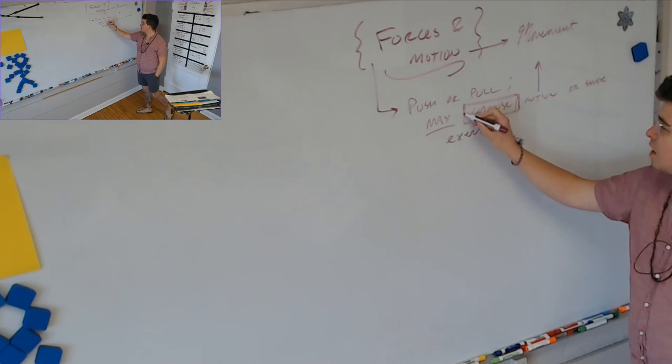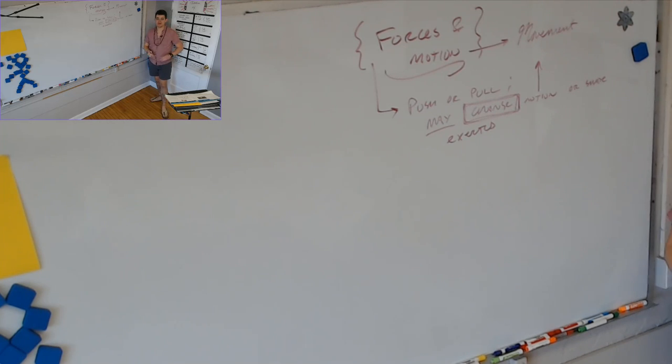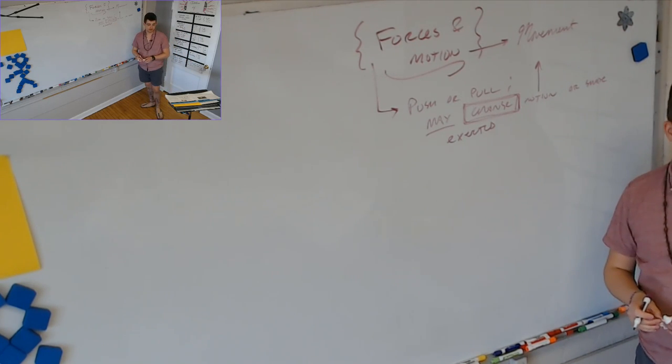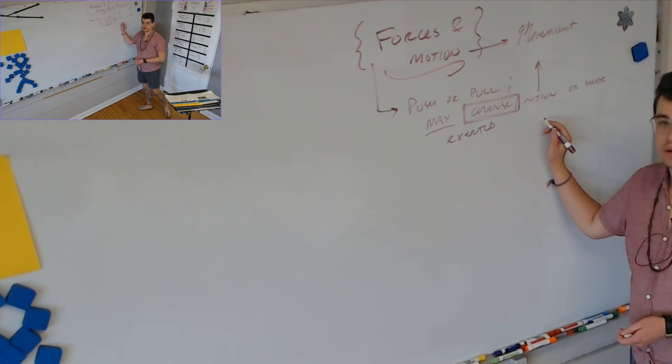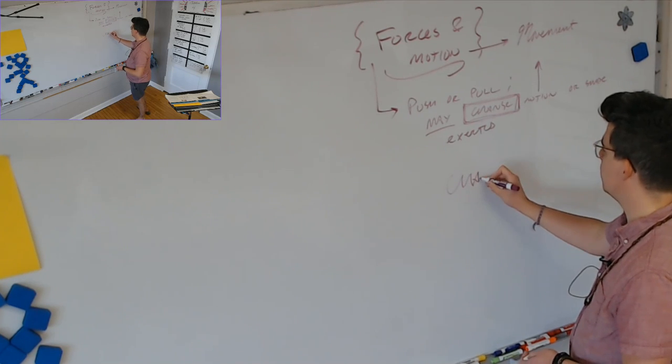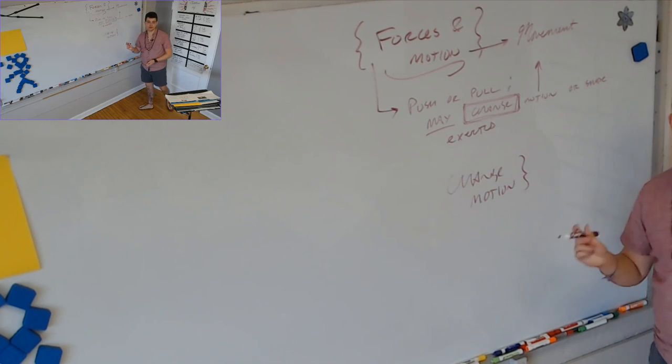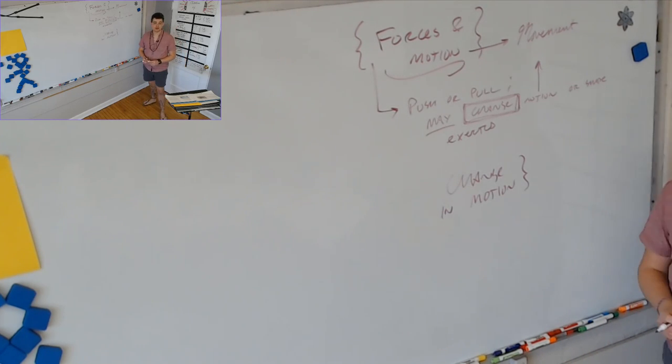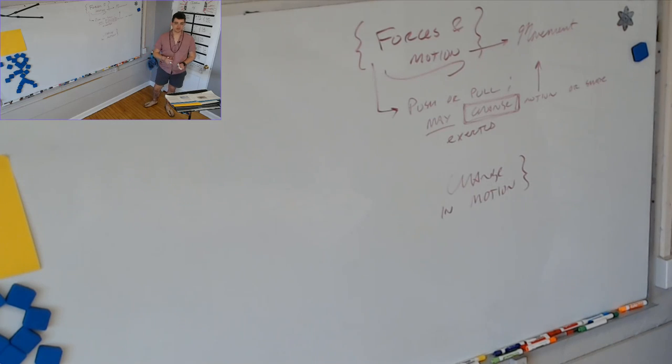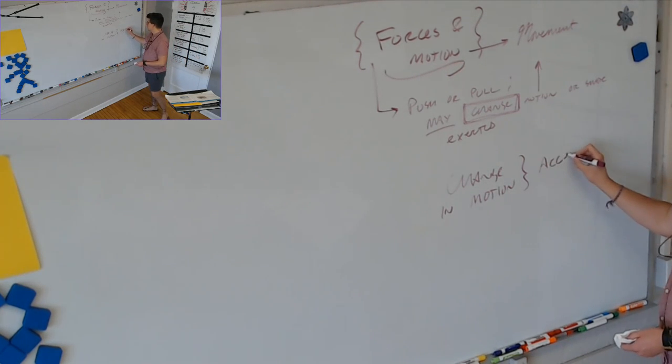But something extremely important here is that it may change. In fact, a lot of science is about this idea of change. A lot of science. In fact, in some ways, I might even say that most, or even all of science, is concerned with change. Change is one of the fundamental attributes that we talk about in science. One of the fundamental attributes of the universe that we talk about in science. And we're talking here about a change in motion. Can anyone think of a more concise, maybe even vocab word that is defined as a change in motion? There is one. Acceleration.